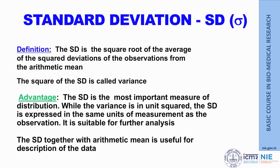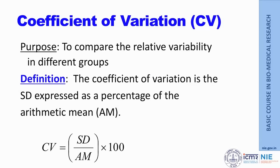Standard deviation together with arithmetic mean is useful for describing data, and these two measures are extensively used for further treatment of data. One more measure is the coefficient of variation (CV). When comparing relative variability across different groups or data sets, the CV is the standard deviation expressed as a percentage of the arithmetic mean. Because both have the same units, the units cancel, giving a pure number. Multiplied by 100, this gives the coefficient of variation.